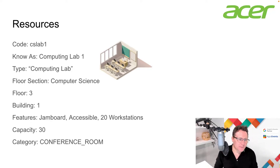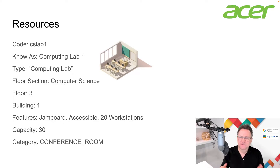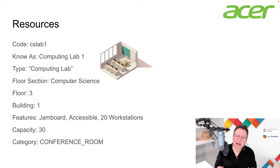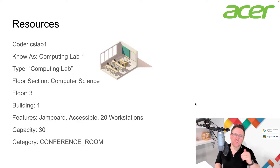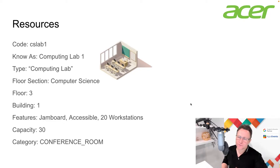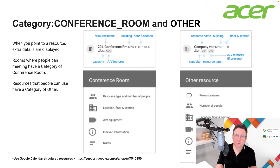The resource will be known as Computing Lab One. I can specify a type of resource, so I'm going to call it Computing Lab. It's going to have a floor section — which is Computer Science — it's going to be on floor three of the building, it's in building number one, and it's got some features: a Jamboard is available, the room is accessible, and it has 20 computer workstations.